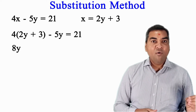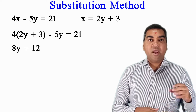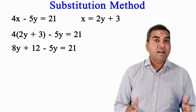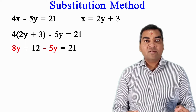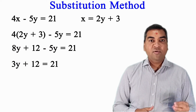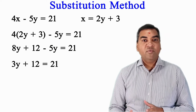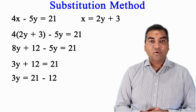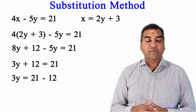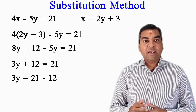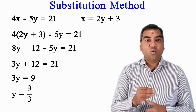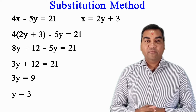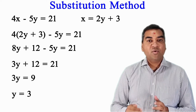Now expand the bracket: 4 multiplied by 2y is 8y, and 4 multiplied by 3 is 12. So we get 8y plus 12 minus 5y equal to 21. Collect the like terms: 8y minus 5y is 3y. So 3y plus 12 equal to 21. Move 12 to the other side: 3y equal to 21 minus 12, which is 3y equal to 9.